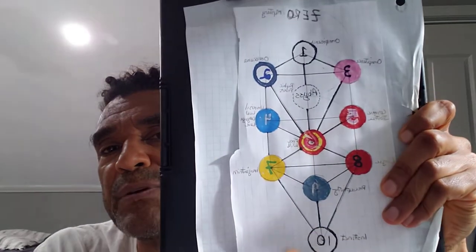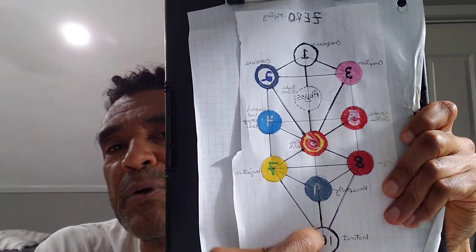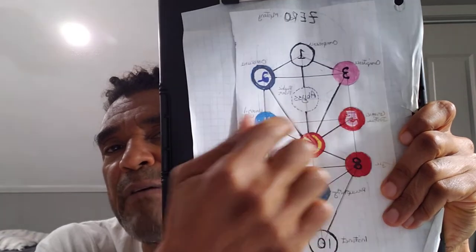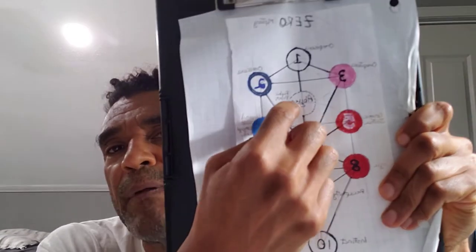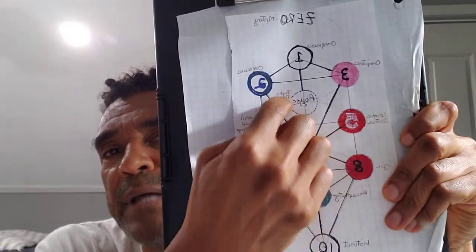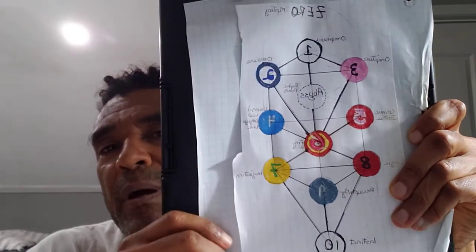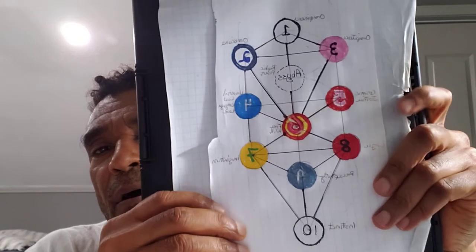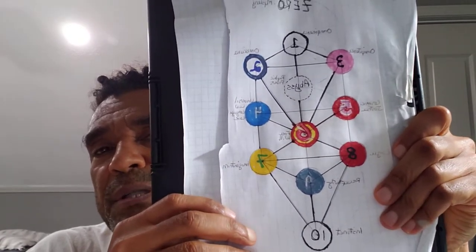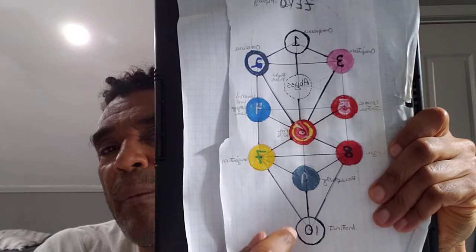You can see it has 10 different circles or spheres, number 10, 9, 8, 7, 6, 5, 4, 3, 2, and 1. There is a thing here called the abyss, a dotted circle, and then there is a zero above the tree. Each one of them is more or less, of those 12, are our faculties of consciousness. We start from the bottom and move up.